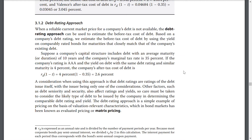We estimate the before-tax cost of debt by using the yield on a comparably-rated bond for maturities that closely match the company's existing debt. Suppose a company's capital structure includes debt with an average maturity of 10 years and a marginal tax rate of 35%. If the company's rating is AAA, then the yield on debt with the same rating and similar maturity is 4%. A consideration when using this approach is that debt rating reflects the issuer, seniority, and security — so care must be taken to consider the likely types of debt to be issued. This approach is a simple example of matrix pricing.